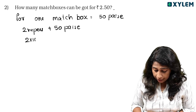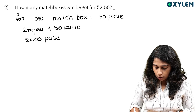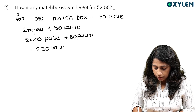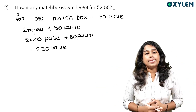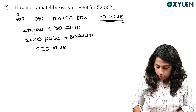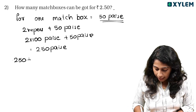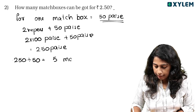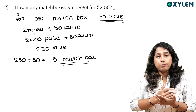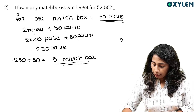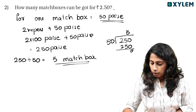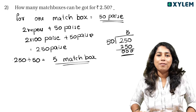2 rupees is 200 by 100, plus 50 by 100 equals 250 by 100. How many matchboxes can be bought for 250 by 100? 250 divided by 50 — 5 times 5 into 5 is 25. So 5 matchboxes can be bought for 2.50 rupees.